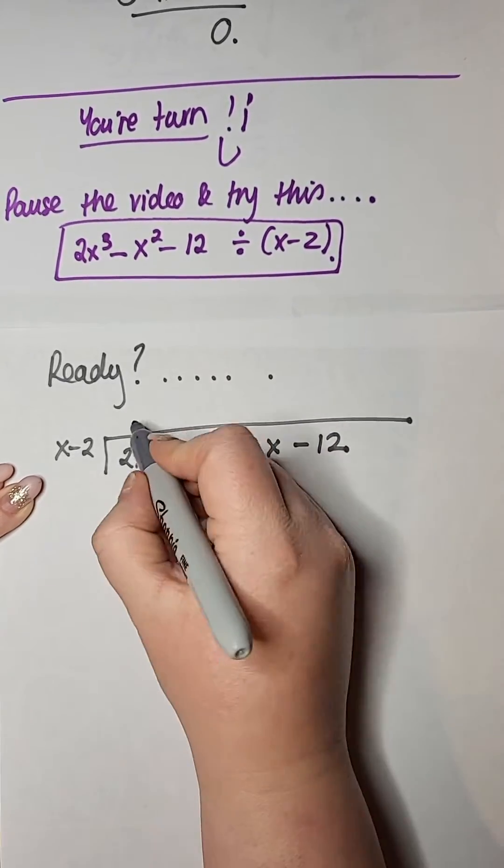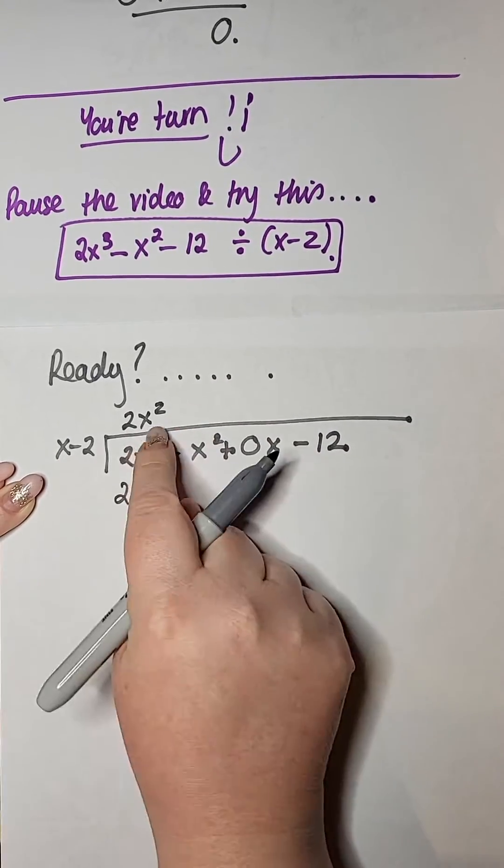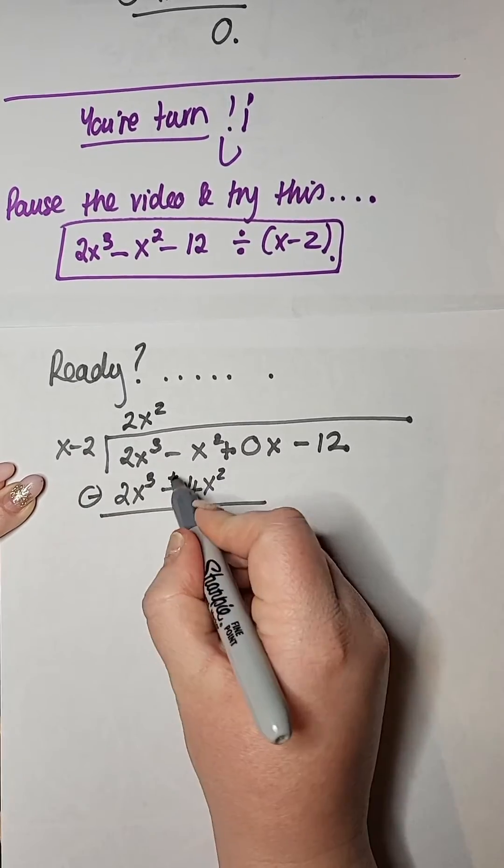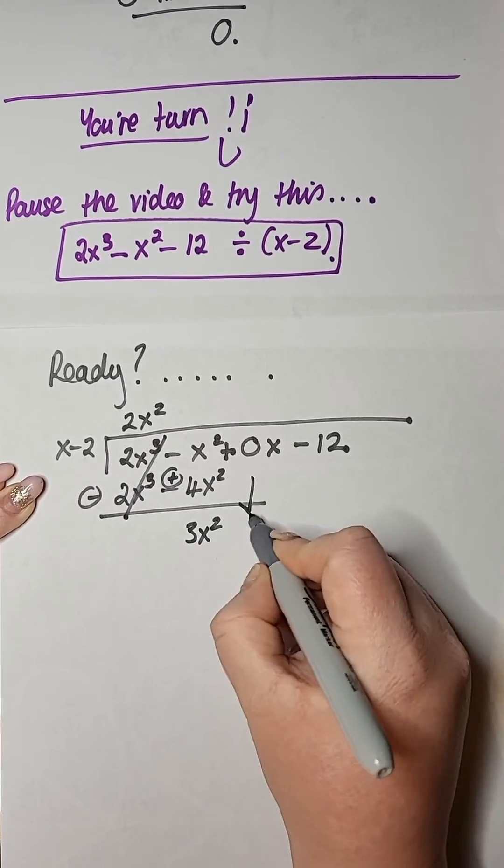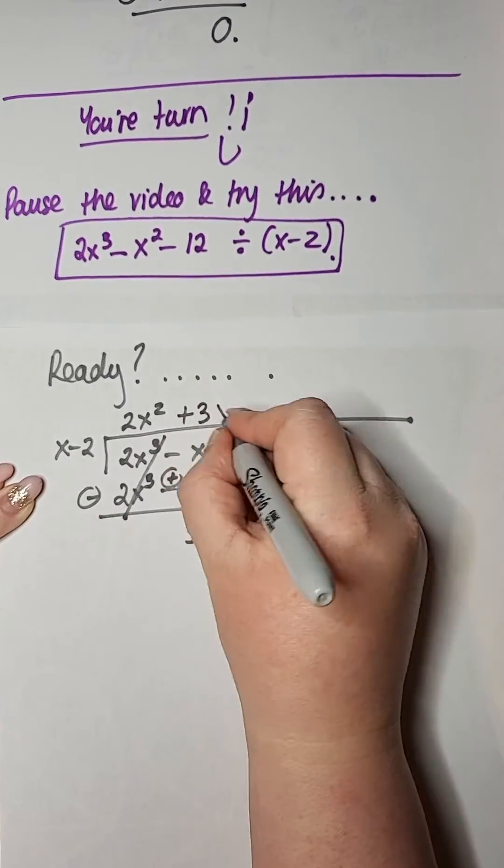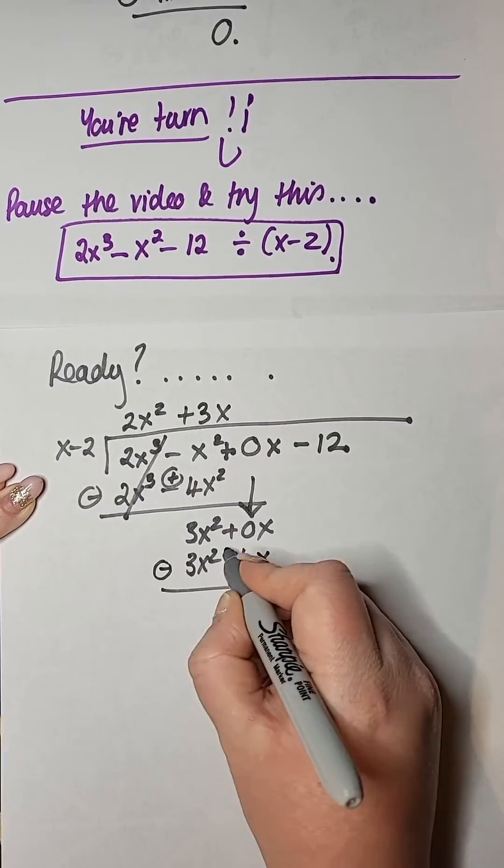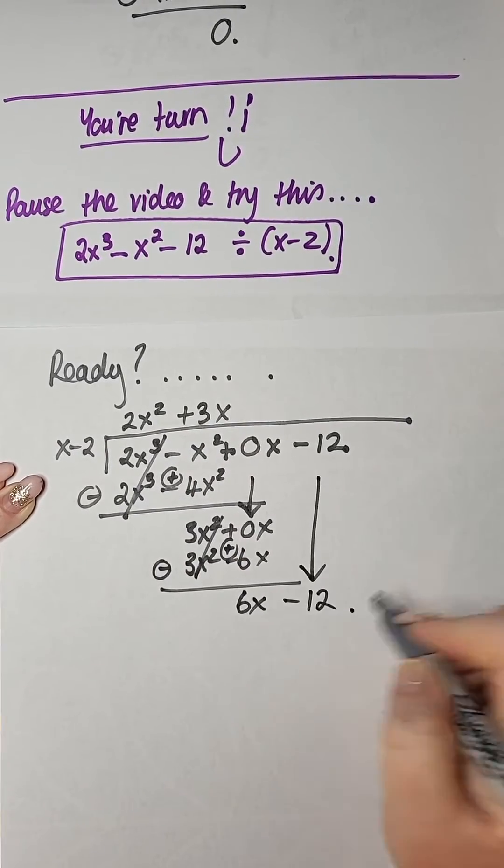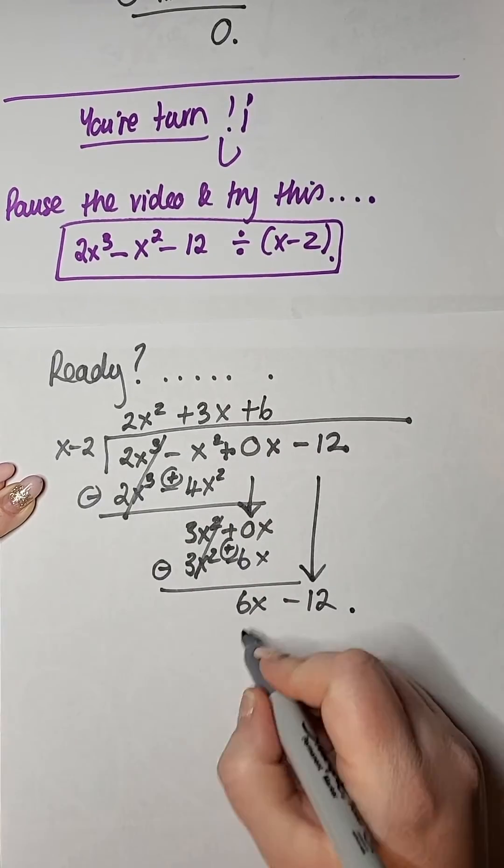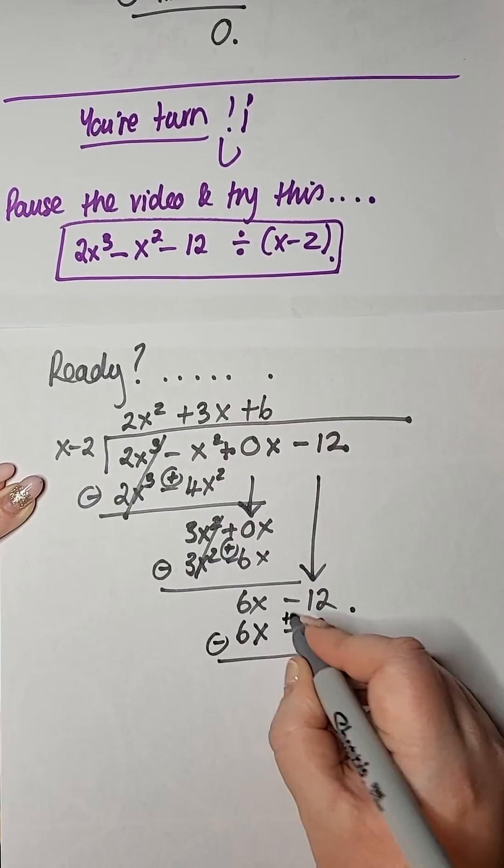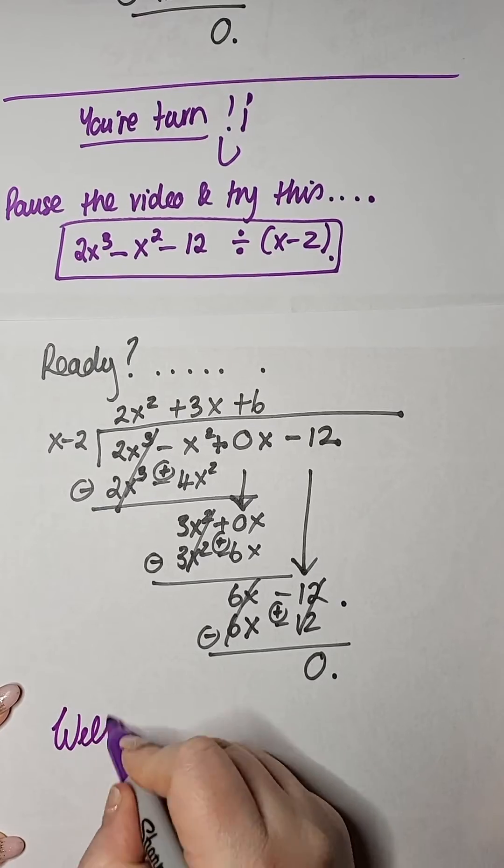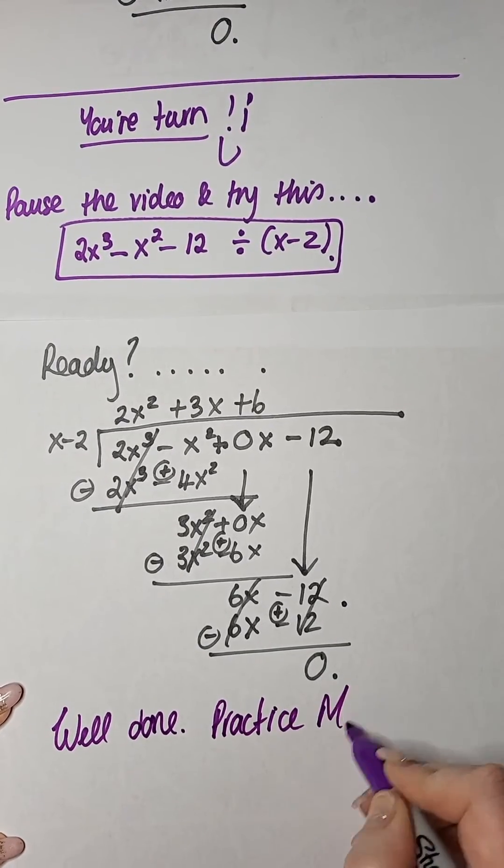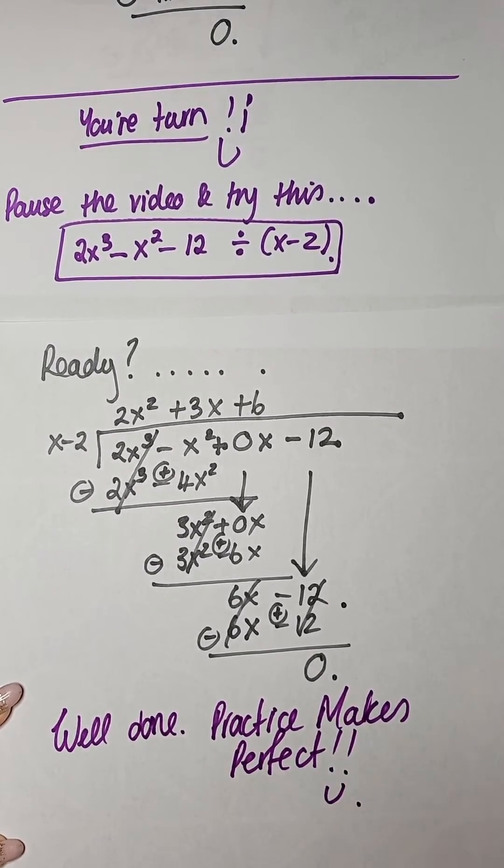So again, I have an x missing there. So I'm going to put in plus 0x in that calculation. I hope that one didn't catch you out. And I'm going to go through the process again. So I'm dividing, multiplying, changing the signs and adding. And I go through that step three full times. And of course, if something is a factor, it will always divide in evenly. You will never have a remainder.